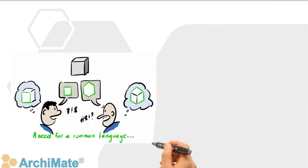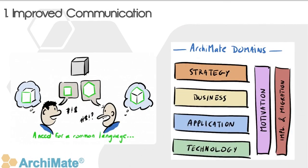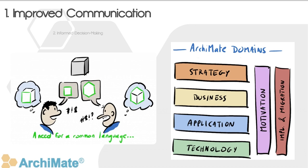Choosing to implement the ArchiMate specification in your organization can yield several benefits. Improved communication: using the ArchiMate specification provides a common language and notation for all stakeholders involved in enterprise architecture. It facilitates effective communication and understanding of complex architectures, enabling better collaboration between business and IT teams.